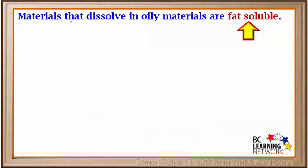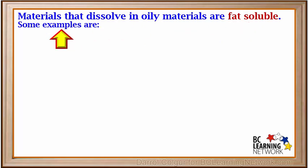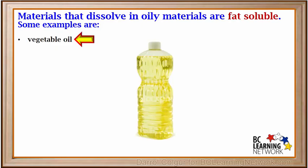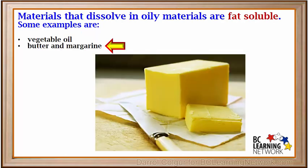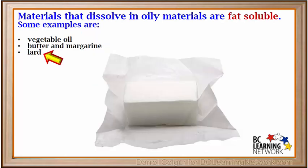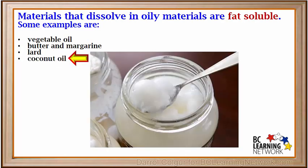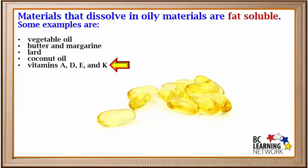Materials that dissolve in oily materials are said to be fat-soluble. Some examples of fat-soluble materials are vegetable oils such as canola oil, corn oil, olive oil, and peanut oil; butter and margarine; lard, which is sometimes used for making pastry; coconut oil; and some vitamins, including vitamins A, D, E, and K.